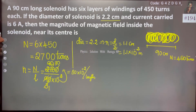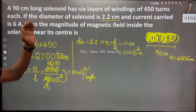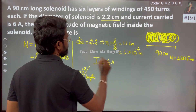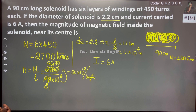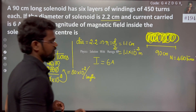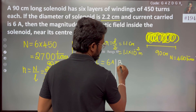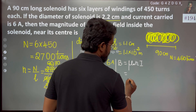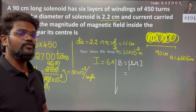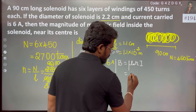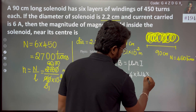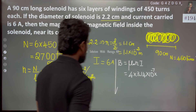The solenoid carries a current of 6A. The magnitude of the magnetic field inside the solenoid near its center is given by B equals mu-zero times n times I, where mu-zero equals 4π into 10 to the power minus 7, and n is the number of turns per unit length.